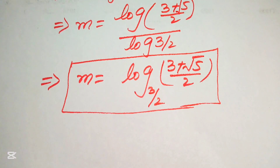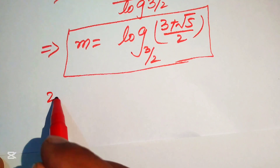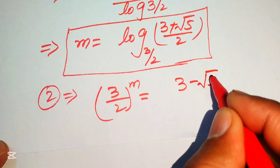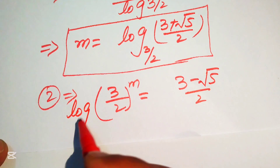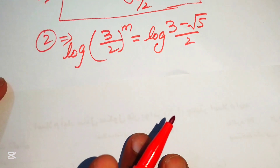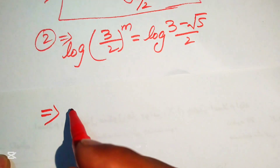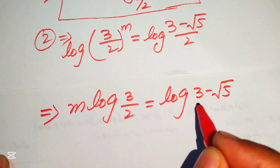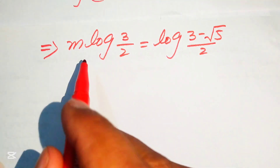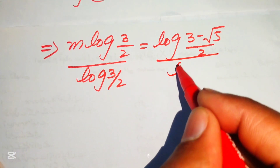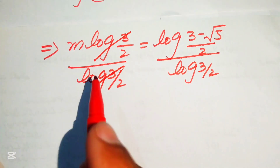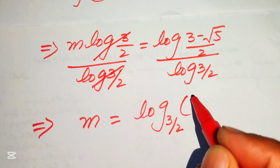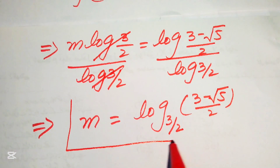For the second solution, solving Equation 2: applying log on both sides, m · log(3/2) = log((3 - √5)/2). Dividing by log(3/2), we get m = log_{3/2}((3 - √5)/2). This is the final answer of the problem.